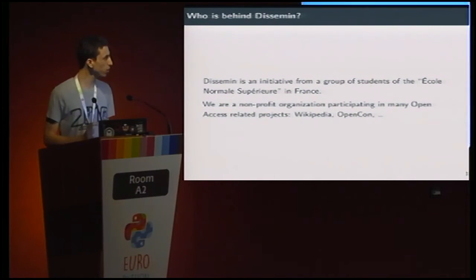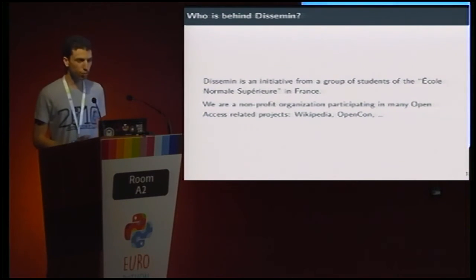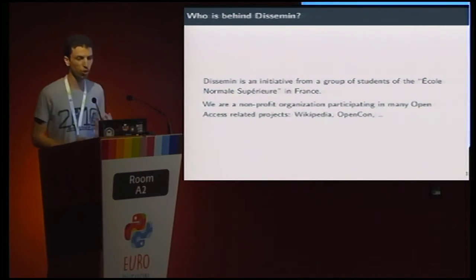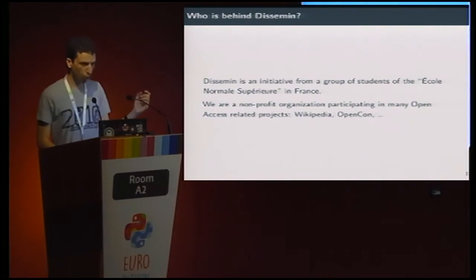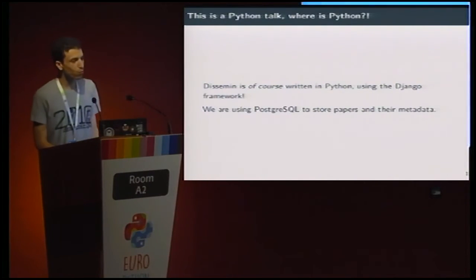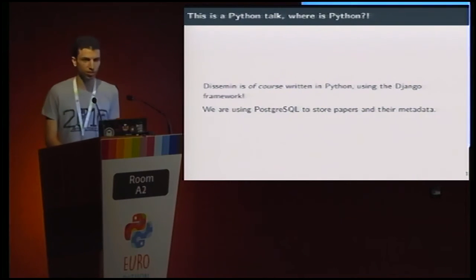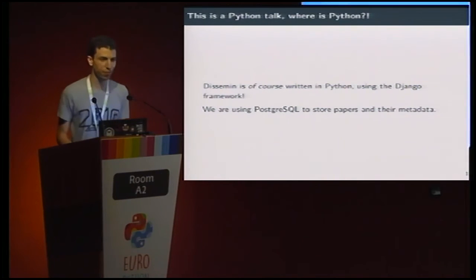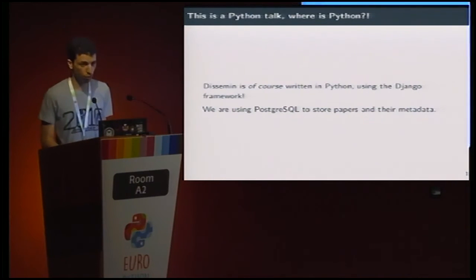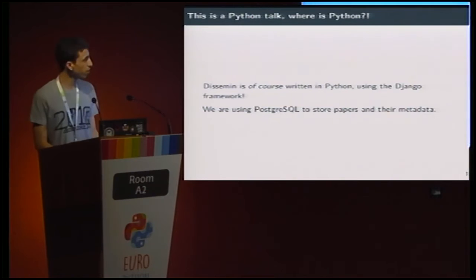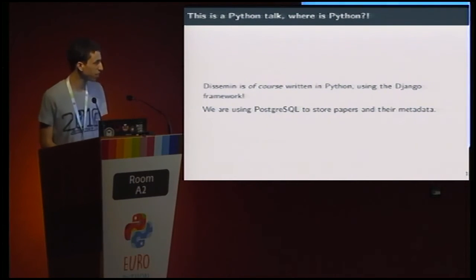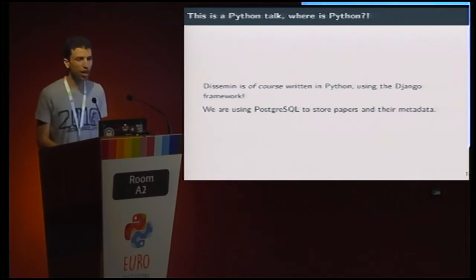To give you more insight, who is behind DCIMIN? DCIMIN was an initiative from a group of students of the École Normale Supérieure in France. We are a non-profit organization participating in many open access related projects. We worked with Wikipedia for an open access bot. And maybe you were telling yourself — but this is a Python talk, where is Python in this story? Well, DCIMIN is of course written in Python using the Django framework. We are using PostgreSQL to store papers and their metadata.